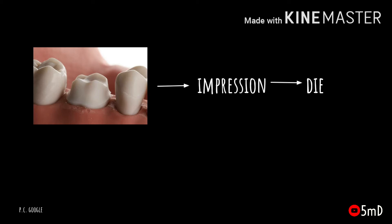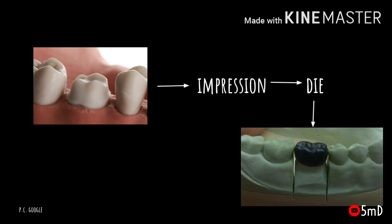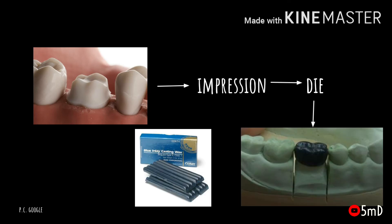After tooth preparation is done, the tooth has to be made into a replica. Therefore an impression is made, in which a die is poured and a die is prepared. When we say a cast, it denotes the replica of the entire dentition and adjacent oral structures, whereas a die is a replica of a single tooth. On that die we will make a wax pattern with a type of wax called inlay wax.